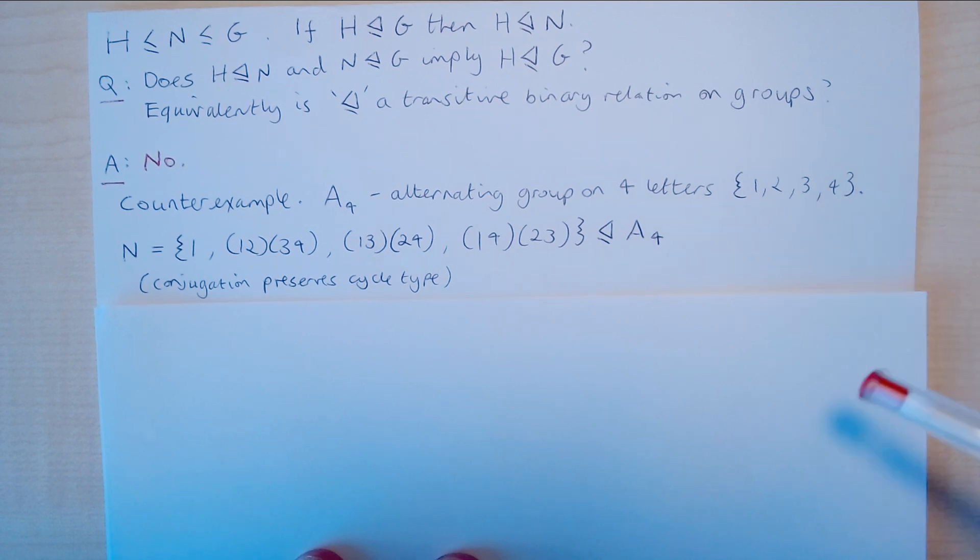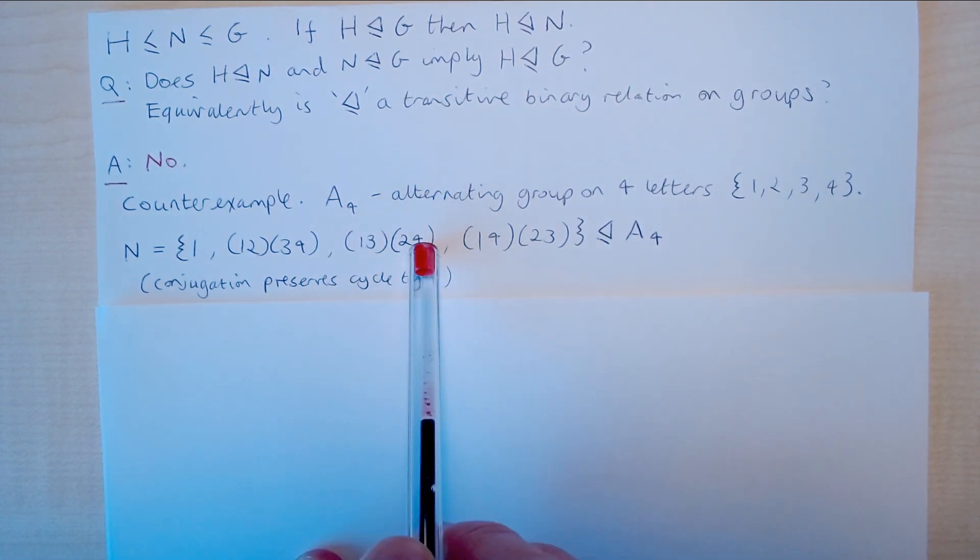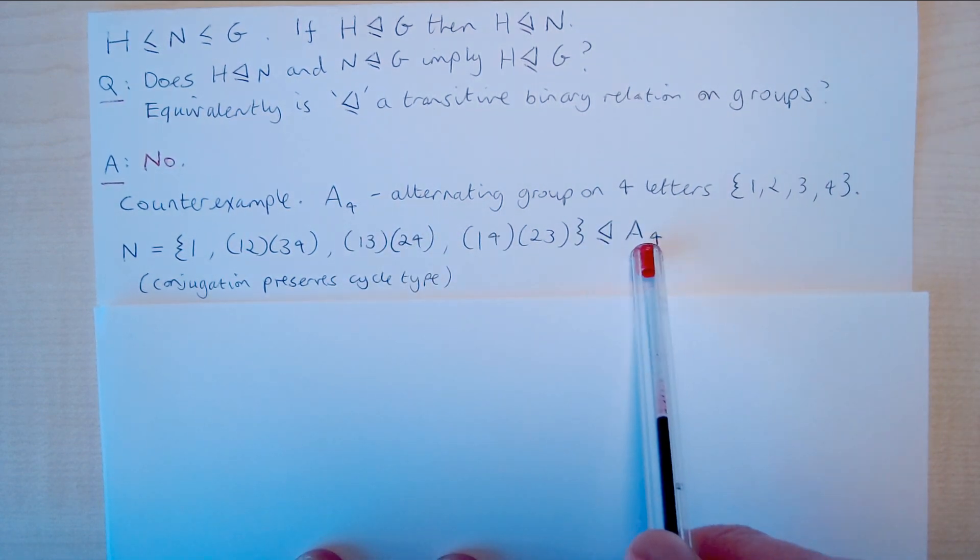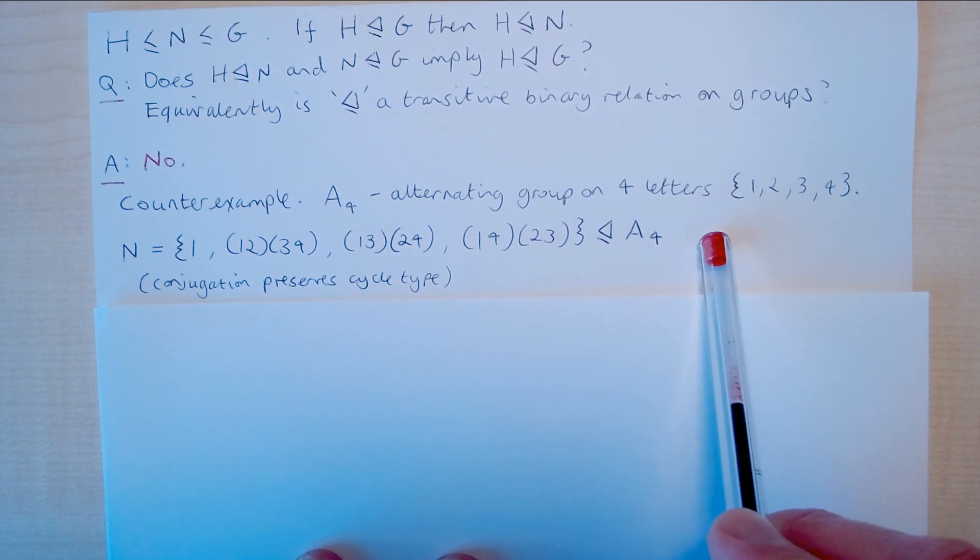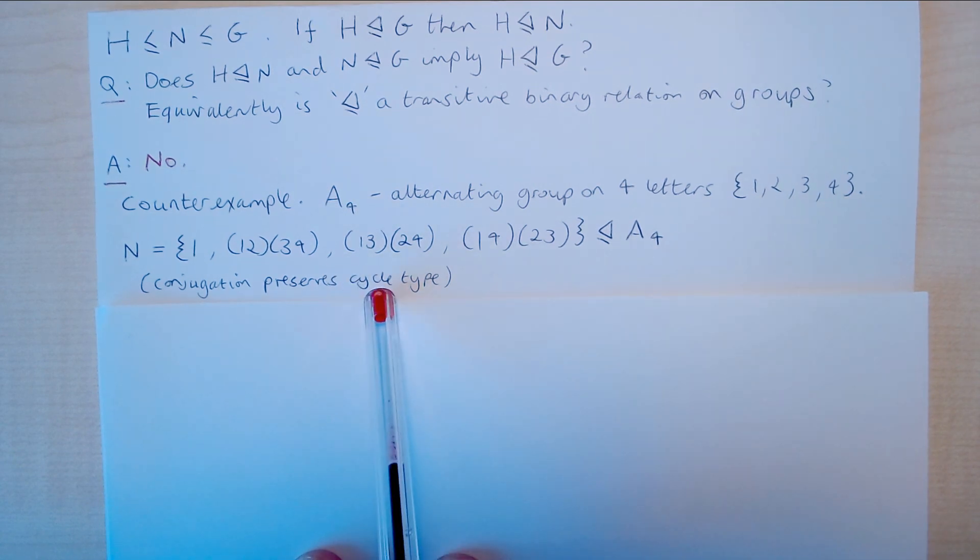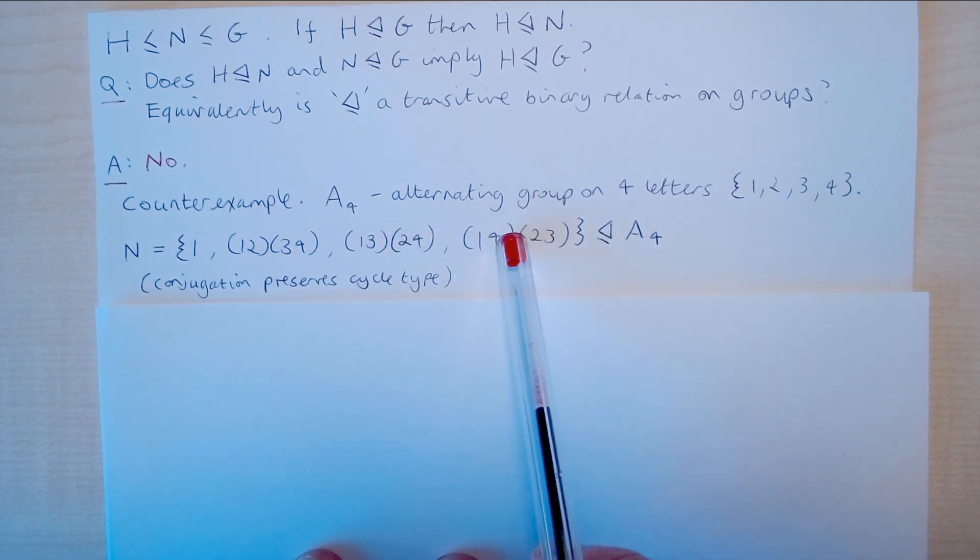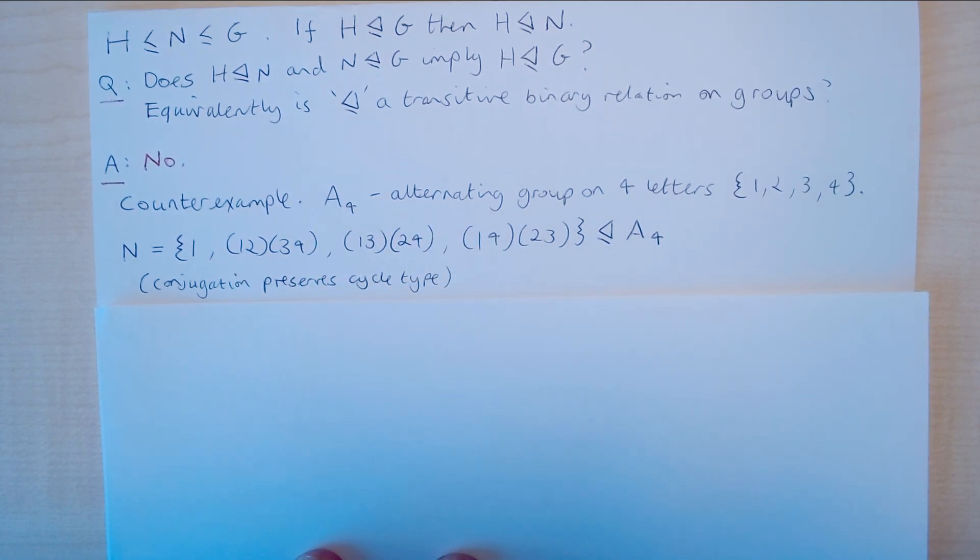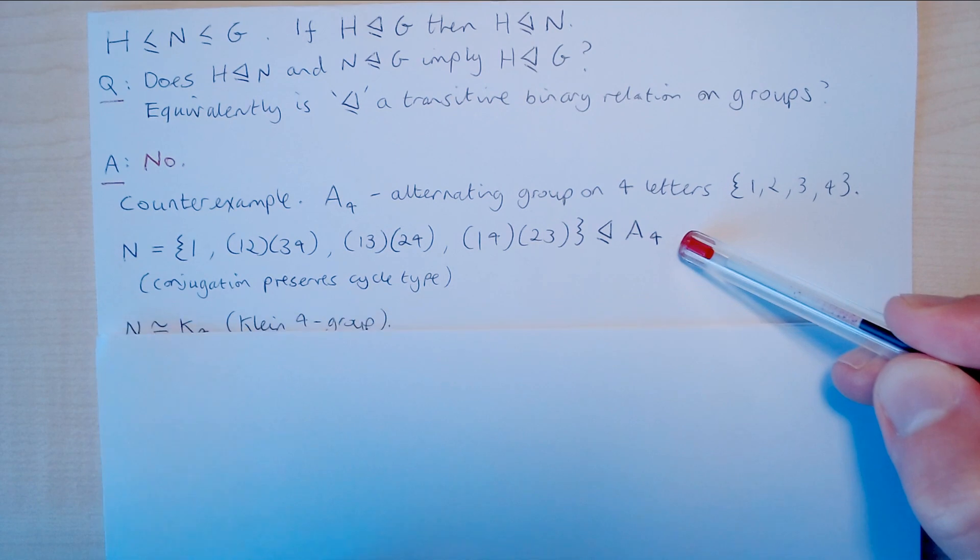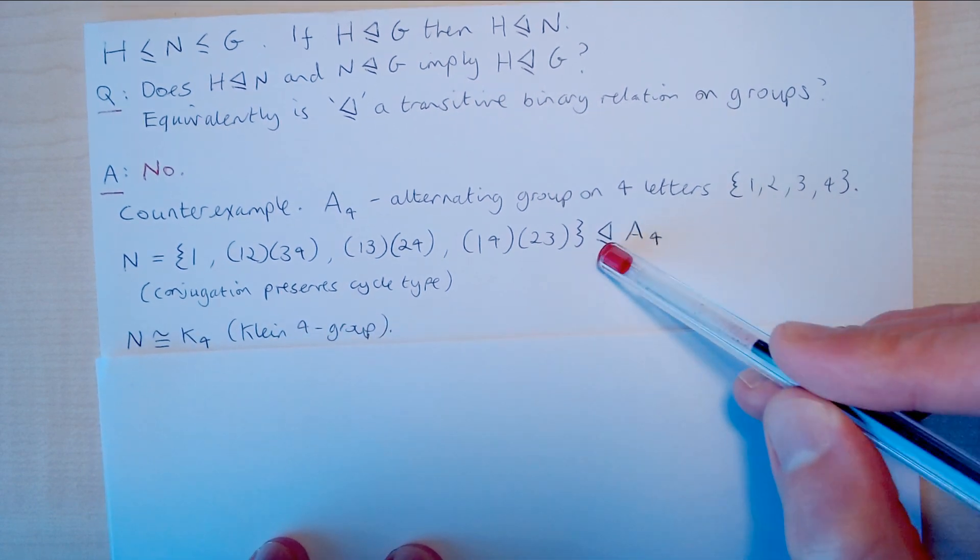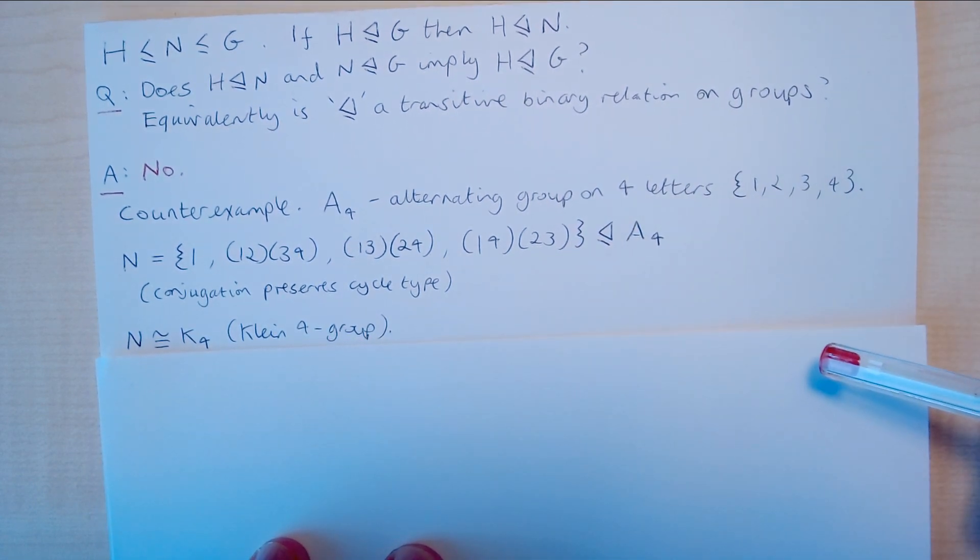We recall that when we conjugate any of these elements by an element of A4 or in fact by an element in the larger group S4, the symmetric group on four letters, the cycle type is preserved. Now these are in fact all of the elements of A4 and indeed S4 with this cycle type. So what we can conclude from this is that N is a normal subgroup of A4.